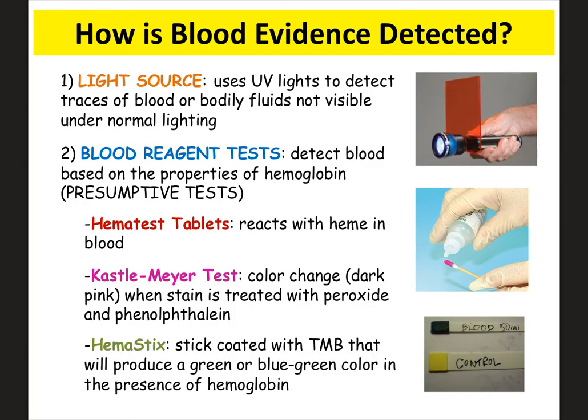First, how is blood evidence detected? Sometimes you might not see it, or somebody tried to clean it up. There are a lot of different ways to detect and identify blood evidence. First, you could use a UV light source, which can identify traces of blood or body fluids that you can't really see under normal lighting. There are also what we call presumptive tests to identify blood. Basically, if it senses that hemoglobin is present, it reacts and gives you a positive result.